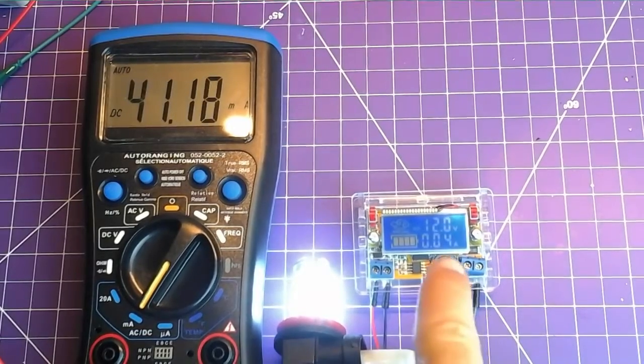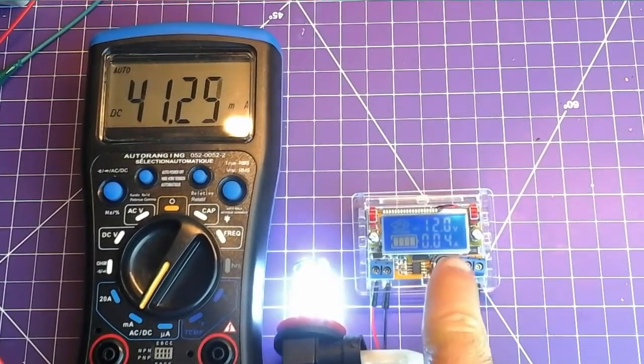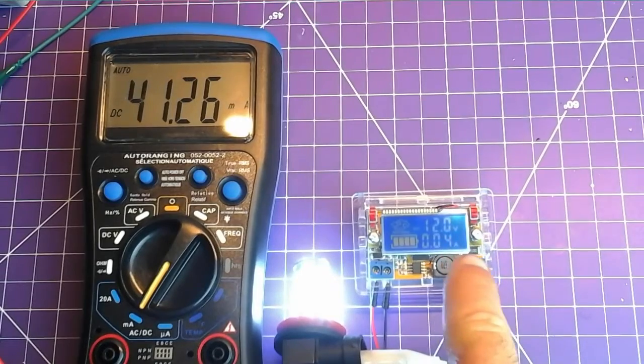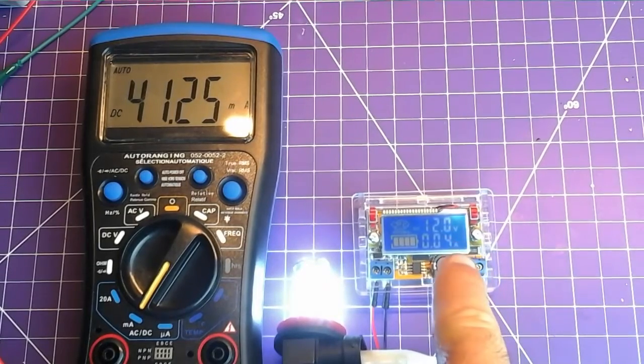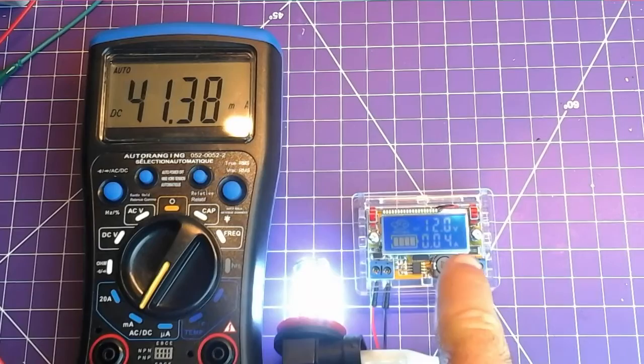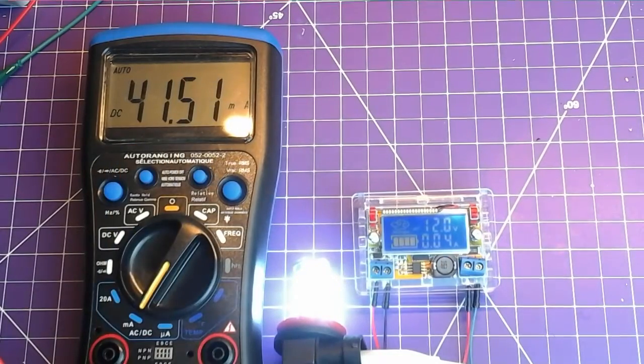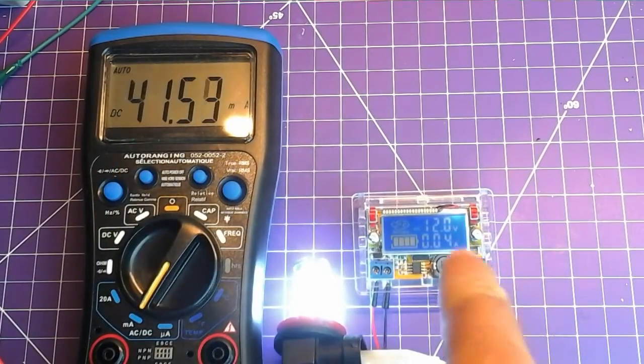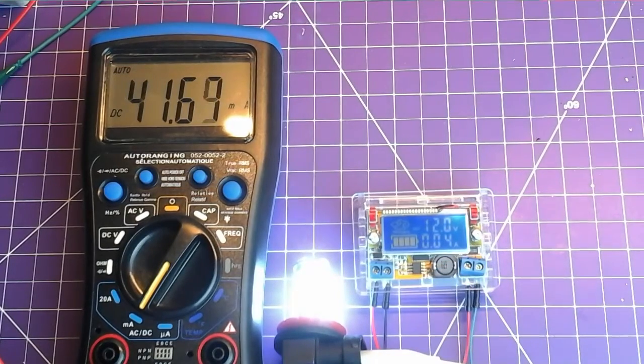And so here we've got 40 milliamps approximately. And we don't know if this is terribly accurate, because there's no more digits after the 4. But here we can see we actually have 41.5 milliamps. And so this unit is actually pretty accurate.